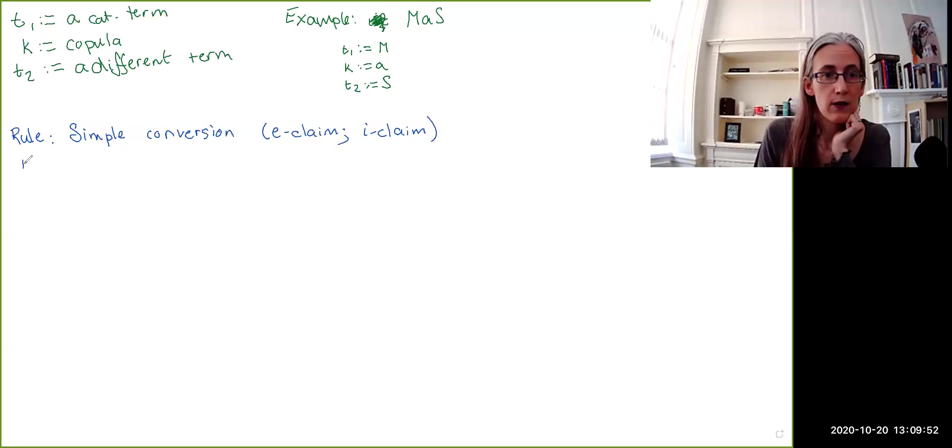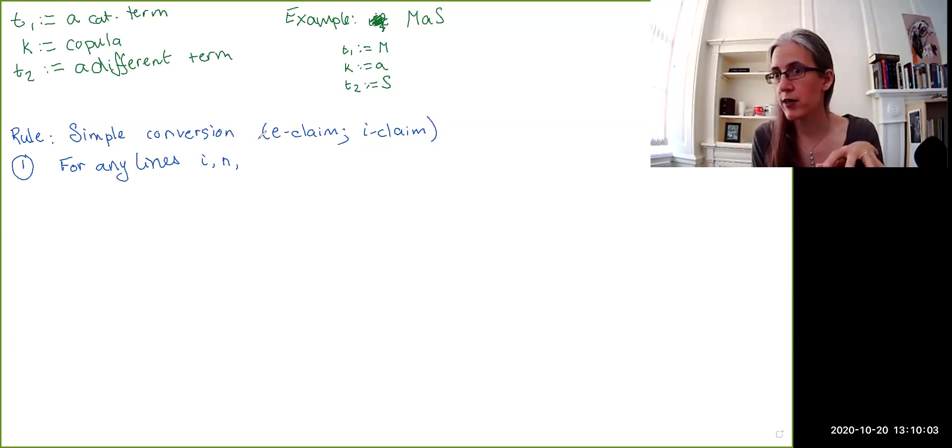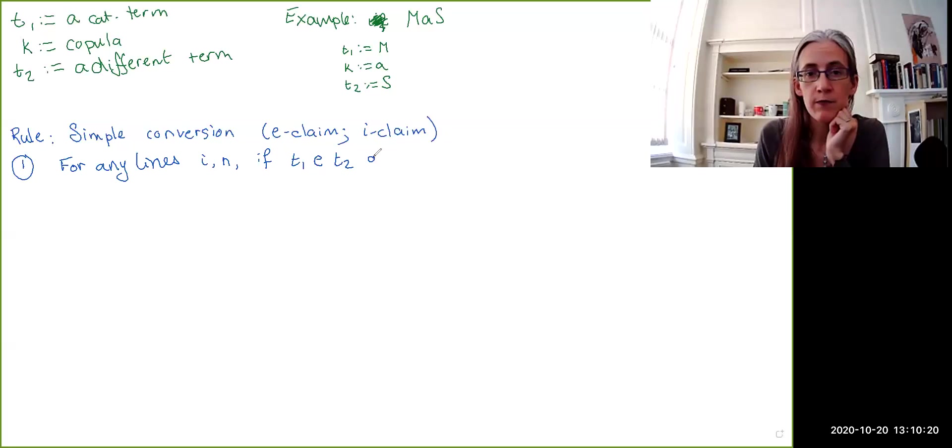So, version number one, to write this out explicitly, for any lines i and n. So, again, these are just arbitrary numbers that occur in your proof. If we have something of the form T1, E, T2, so it has to be an e-claim, but what T1 and T2 are doesn't matter. If this proposition occurs on line i of the proof, again, we don't necessarily know what justification or what annotation line i might have had. We'll just assume that we got it legitimately.